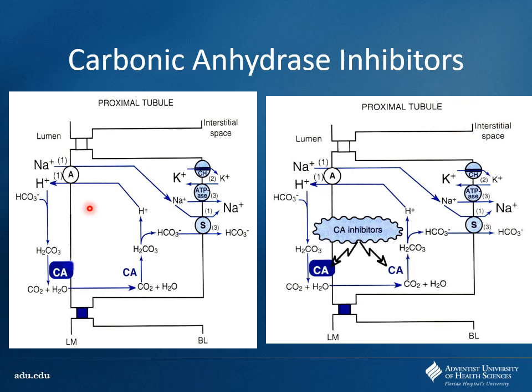By inhibiting carbonic anhydrase, you prevent bicarbonate reabsorption — bicarb stays in the renal tubule and gets flushed out. This decreases systemic pH, causing a metabolic acidosis, since you're losing bicarbonate. This is opposite to what loop diuretics cause — those produce a contraction alkalosis by concentrating bicarbonate in the blood. With carbonic anhydrase inhibitors, you see acidosis, which distinguishes them.